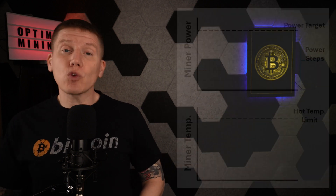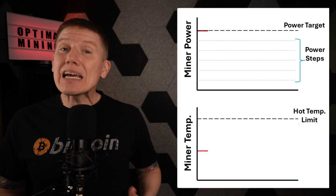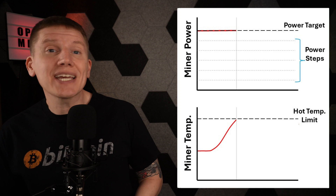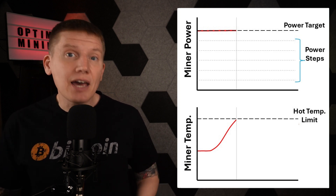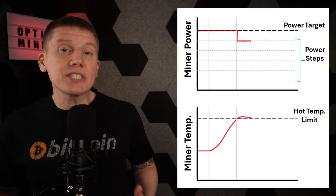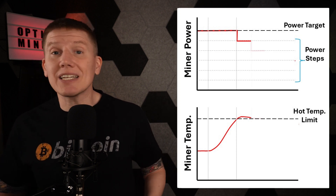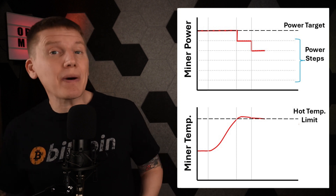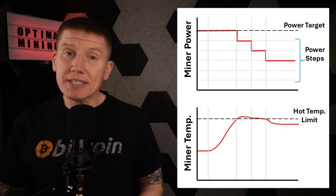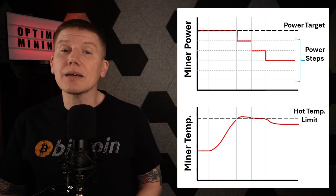The power target is the power level the miner will attempt to maintain, the power step is the size of power adjustments the firmware is allowed to make, and the hot temperature limit is the upper temperature allowed for miner operation. When the miner is running normally, the firmware will attempt to run the miner at that power target level. But if the miner starts to heat up and the temperature hits that hot temperature limit, the dynamic performance scaling will automatically decrease the miner power by that power step increment. This process will continue, reducing miner power as needed to maintain temperatures underneath the hot temperature limit.